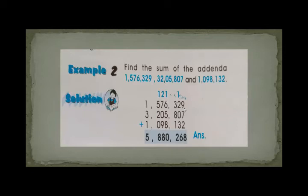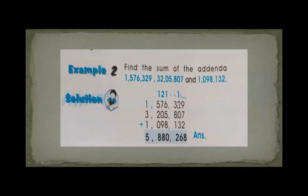Starting from the right side. 9 plus 7 plus 2 equals 18: write 8, and 1 shifts to the tens place. First of all, tell me: in which period are these numbers given? In international period, because in international notation, digits are grouped in 3, 3, 3. So these numbers are given in international period.